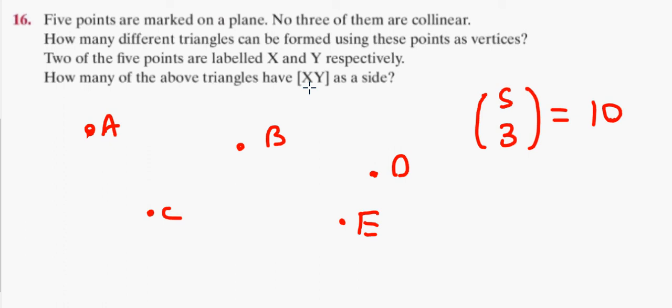Now, two of the five points are labeled X and Y respectively. So let's change those two there. Just because I'm a bit pedantic, I'll call that B. Two of the five points are labeled X and Y respectively. How many of the above triangles have XY as a side? Well, X, Y has to be two of the points you've chosen. That leaves one point left over to choose. You did have five points to choose from, but you chose X and Y already. That leaves three points left over. And 3C1 should be three of the triangles.